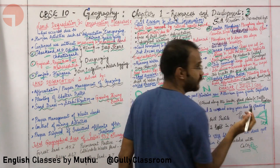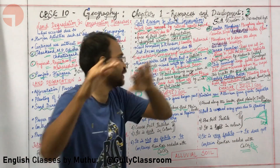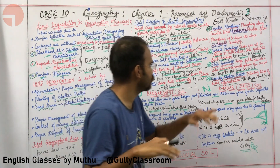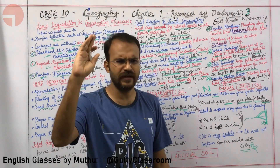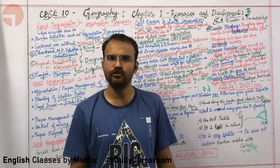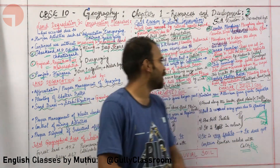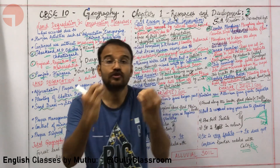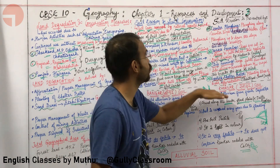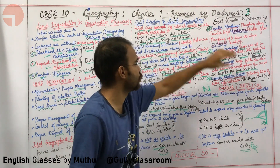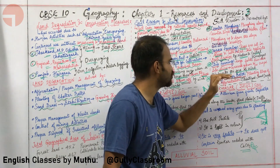Fourth, creating shelter belts — planting a lot of trees and doing afforestation to stabilize sand dunes. Thorny bushes can also be part of your shelter belt. So the four methods to prevent soil erosion are: contour ploughing, terrace farming, strip farming, and creating shelter belts.